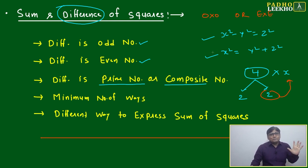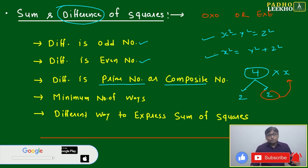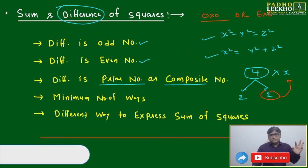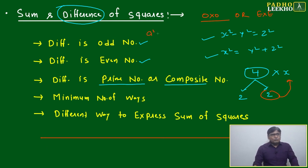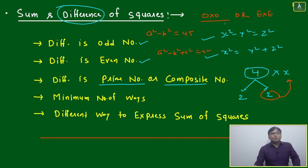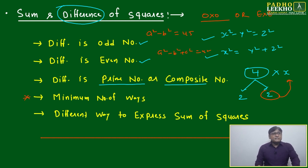The number of ways you can factorize as odd × odd or even × even determines in how many ways you can write the number as a difference of squares. For example, 45 — how many ways can 45 be written as odd × odd or even × even? Since 45 is odd, you can't write it as even × even, so you only count odd × odd factorizations. Note: do not apply this for three-number formats like a² − b² + c² = 45; this rule applies only for the two-number format a² − b² = 45.